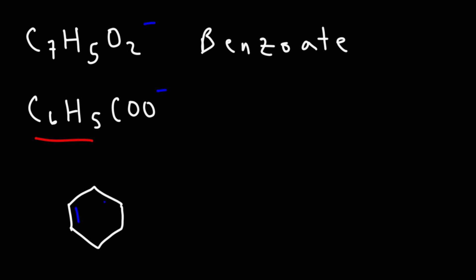We have six carbons in a ring with alternating double bonds, and there's five hydrogen atoms on these six carbons. The other carbon is attached to this group, which we've seen before in acetate. It's going to have that carboxylate structure. That is the structure of benzoate.